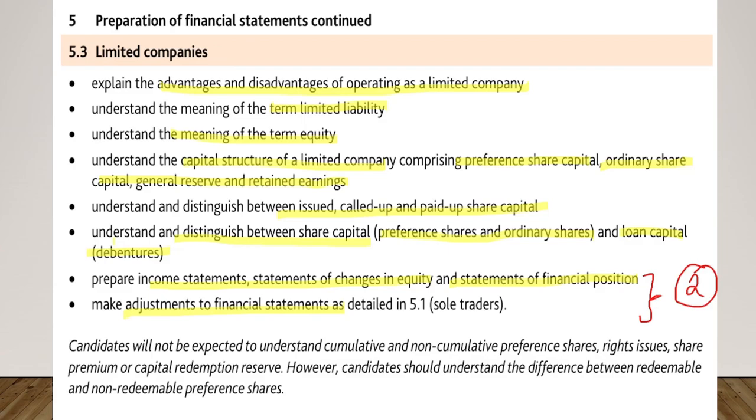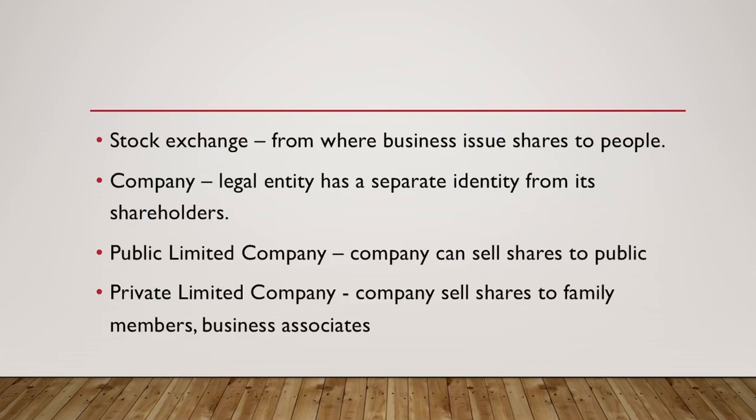Let's look at some definitions. First, stock exchange — this is where the business issues shares to people. A company is a legal entity which has a separate identity from its shareholders. A public limited company can sell shares to the public, and a private limited company can sell shares to family members or business associates.